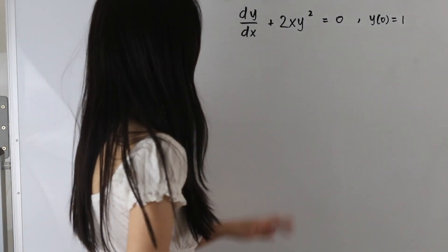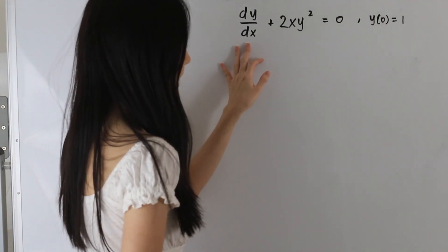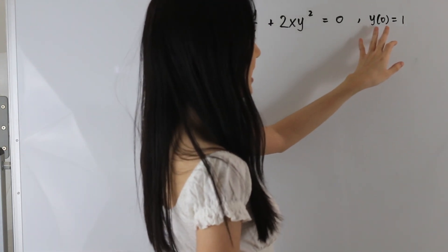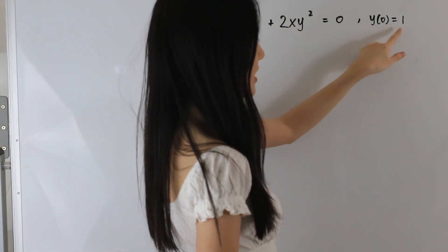Here we have the first derivative of y with respect to x plus 2xy squared is equal to 0, and we are given the initial condition y of 0 is equal to 1.